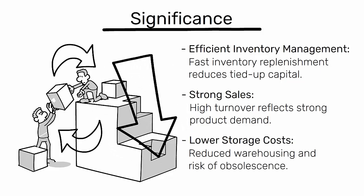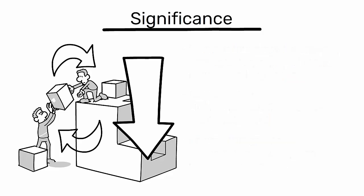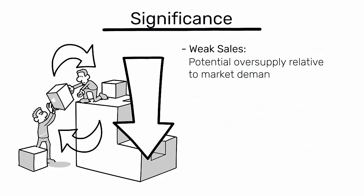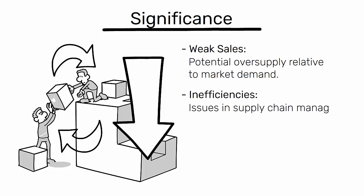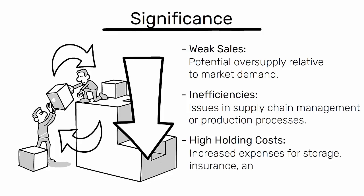Conversely, a low ratio may reveal weak sales and potential oversupply relative to market demand. It can also indicate inefficiencies in supply chain management or production processes, as well as high holding costs — including increased expenses for storage, insurance, and spoilage risks.